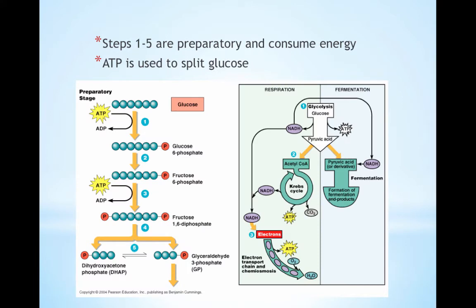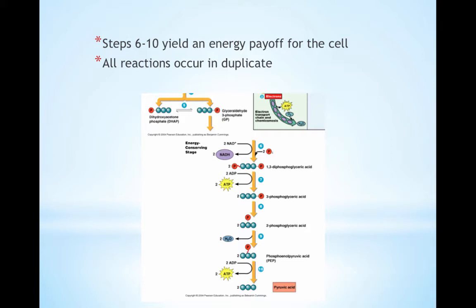Steps one through five are preparatory and consume energy. ATP is used to split glucose. But in steps six through eight, energy is yielded. Four ATPs are made and we consider this the energy payoff section. All of these reactions occur in duplicate because at the end of steps one through five, you had two molecules.